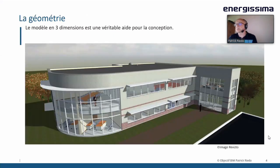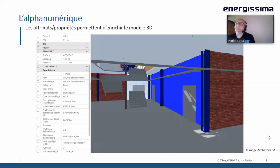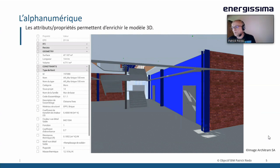Si j'ai un peu de temps à la fin, je vous ferai rapidement une démonstration sur ces modèles. D'une manière générale, la géométrie, c'est cette 3D, c'est utile déjà pour la partie de la conception. Ces objets qui composent cette géométrie, on va pouvoir les enrichir avec ce qu'on appelle l'alphanumérique ou des textes. Il n'y a pas vraiment de limite sur ce qu'on peut ajouter dans un modèle. Ici, pour un mur, on aurait par exemple tous les détails pour les calculs énergétiques.